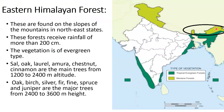Eastern Himalayan forests are found on the slopes of the mountains in northeastern states, receiving rainfall of more than 200 centimeters. The vegetation is evergreen. Trees such as oak, laurel, amoora, chestnut, and cinnamon are the main trees from 1200 to 2400 meters altitude. Oak, birch, silver fir, pine — these are all coniferous trees. Spruce and juniper are the major trees from 2400 to 3600 meters altitude.